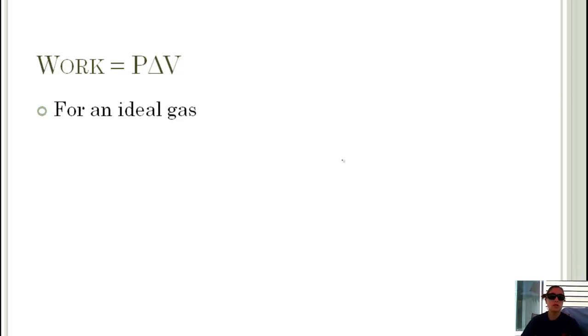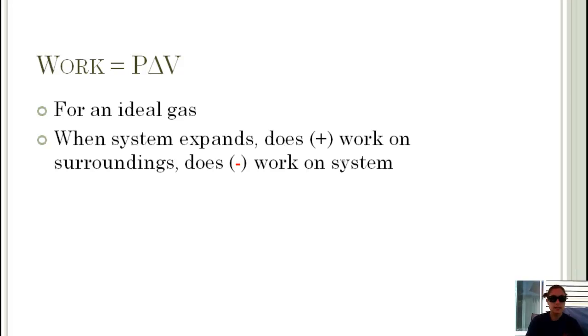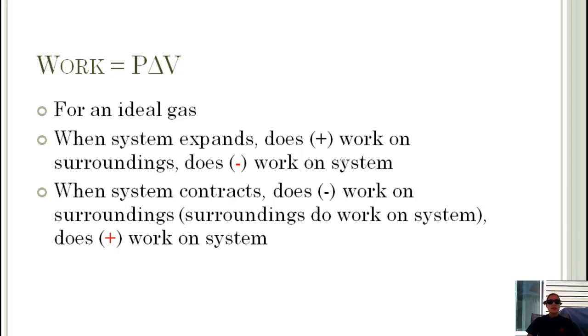We said that work was equal to pressure times the change in volume. We can use this for an ideal gas. When a system expands, so when its volume increases, it does positive work on the surroundings. In terms of the system, though, we would say that it does negative work because the system is the one doing the work. When the system contracts or the volume decreases, it does negative work on the surroundings. Work is being done on it, which makes the work positive for the system. So we can change our equation to say that work is equal to negative P delta V from the point of view of the system, and that's the point of view that we're going to take for all of our problems.